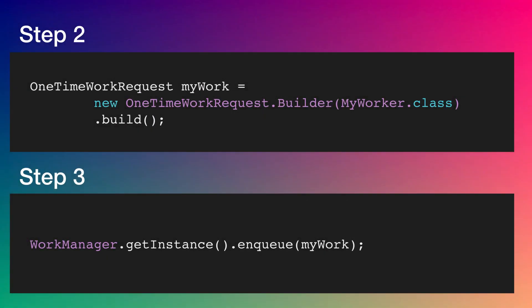Our second step was to create a WorkRequest. It can be of two types: a one-time WorkRequest or a periodic WorkRequest. Here we've created a one-time WorkRequest and provided the class we created in step one. And in step three, we get an instance of WorkManager and enqueue our work. That's all you need to do with WorkManager.